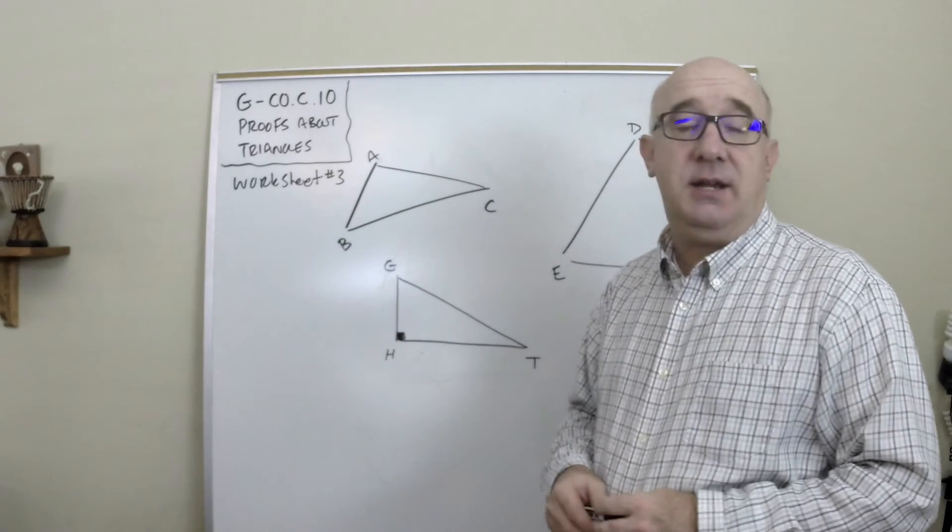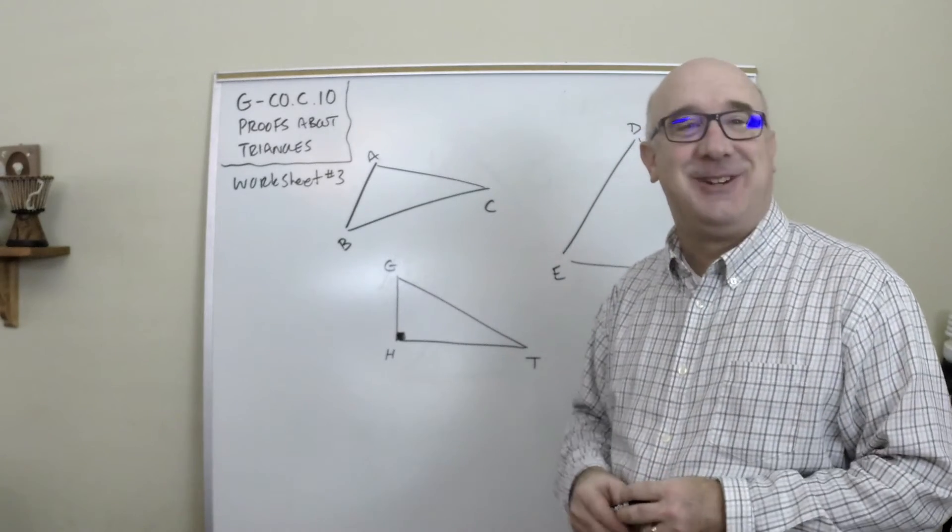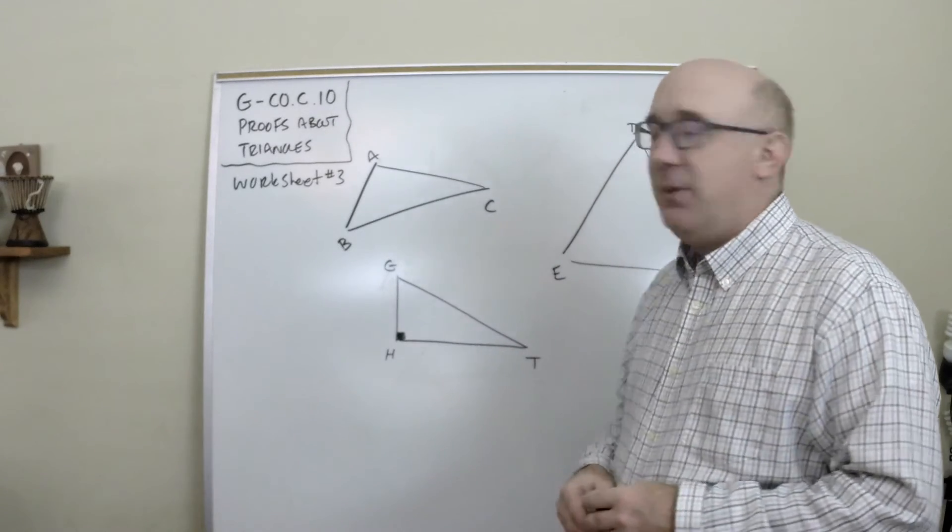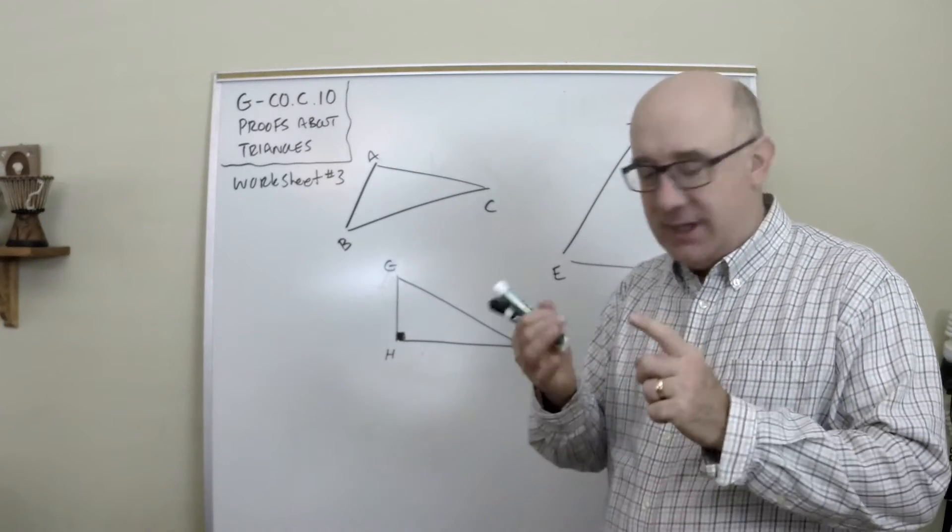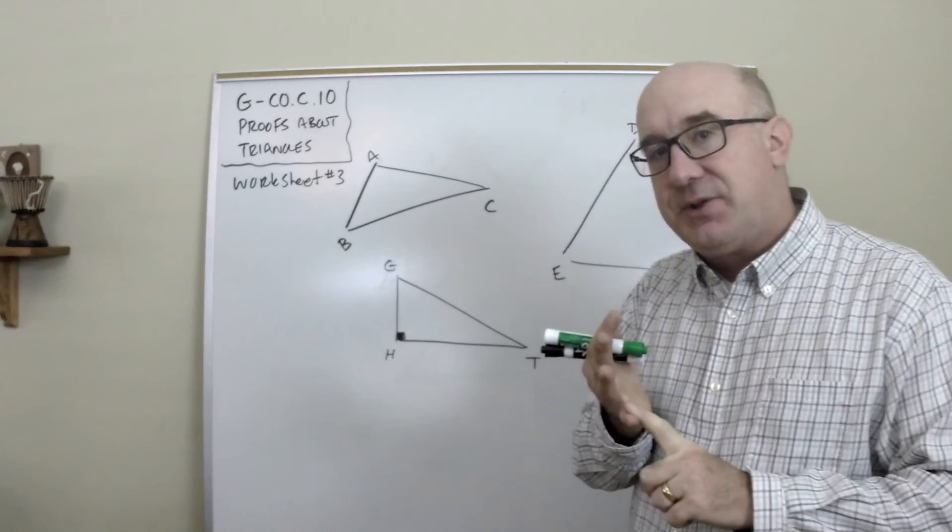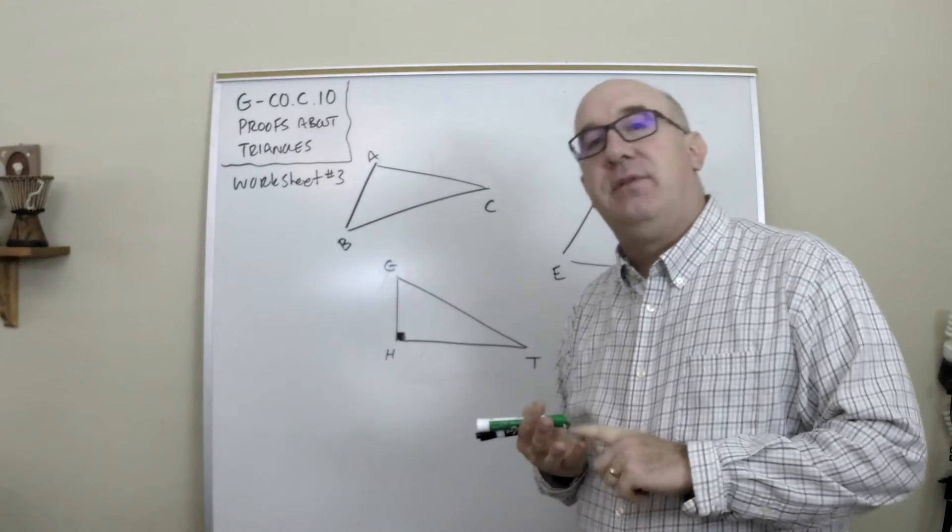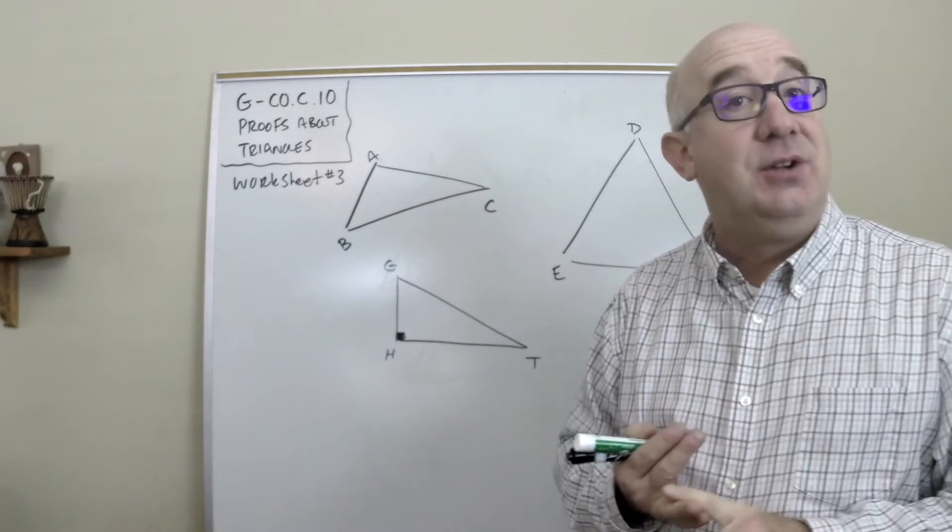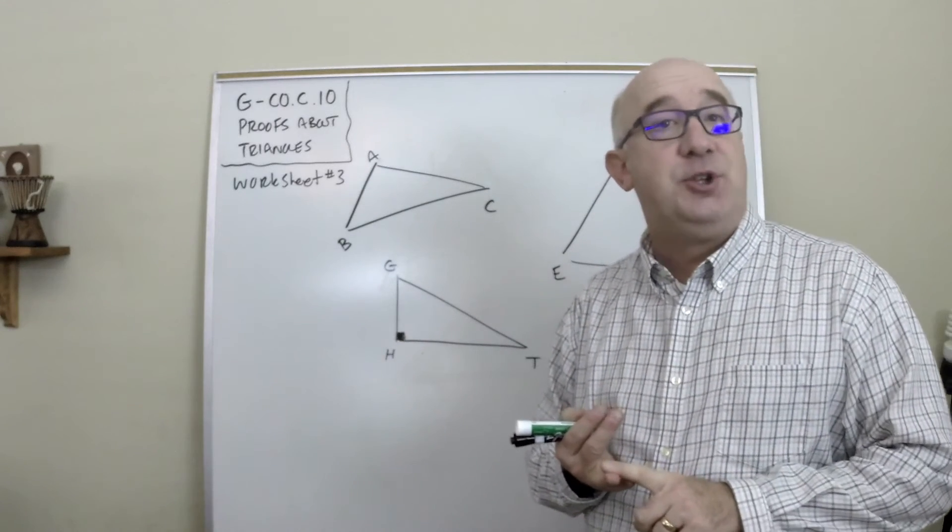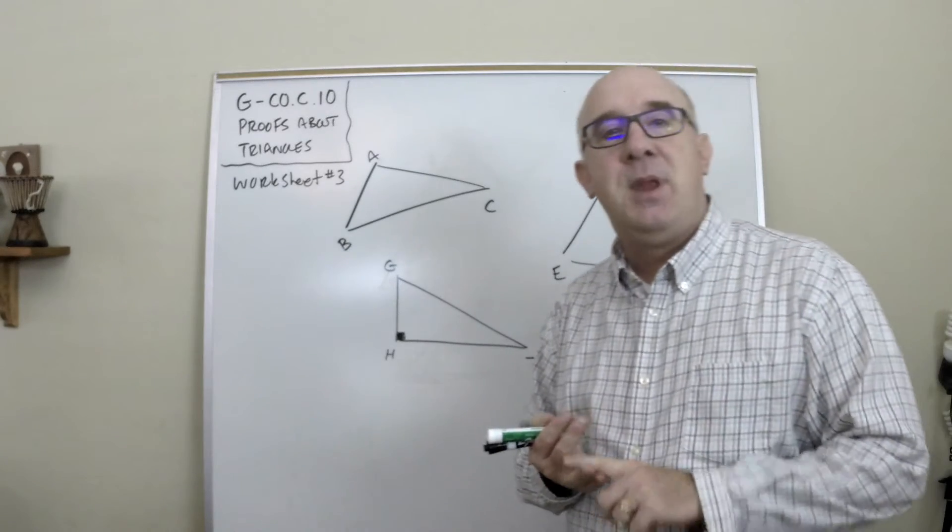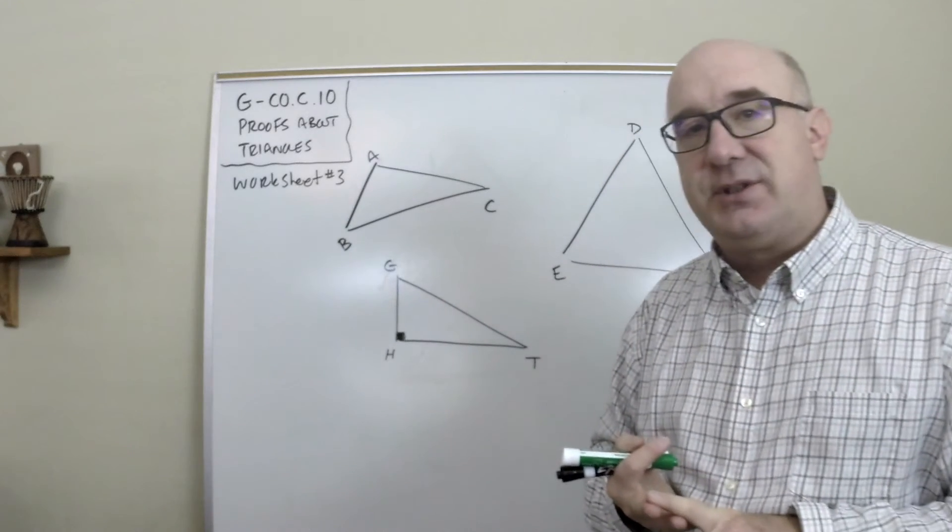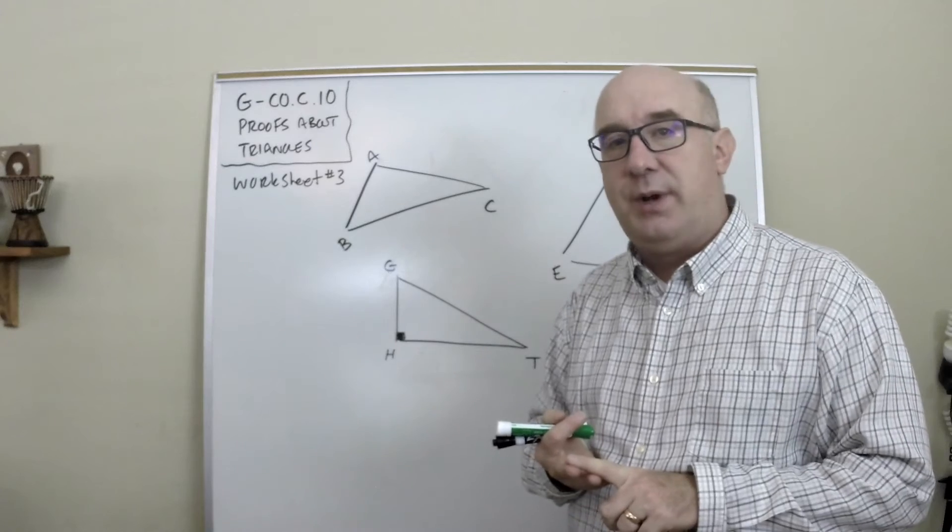Let's look at GCOC10. One more time, we've looked at interior angles equaling 180, we've looked at external angle equals the sum of the two remote angles, and we've looked at the base angles of an isosceles must equal 180.